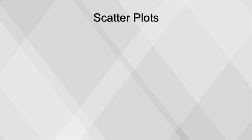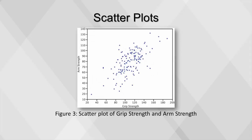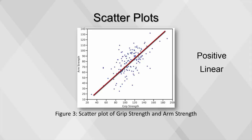Figure 3 shows a scatter plot of arm strength and grip strength from 149 individuals working in physically demanding jobs, including electricians, construction, maintenance workers, and auto mechanics. Not surprisingly, the stronger someone's grip, the stronger their arm tends to be. There is, therefore, a positive association between these variables. Although the points cluster along a line, they're not clustered quite as closely as they are for the scatter plot of spousal age.